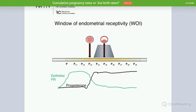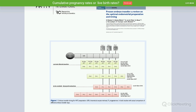The window of endometrial receptivity naturally occurs six days after the LH surge and lasts around four days. This is very important to consider when timing embryo transfer. We start progesterone when we know we are going to transfer embryos: for day 3 embryos, progesterone should start four days before; for day 4 embryos, five days before; and for blastocysts, progesterone should start six days before.